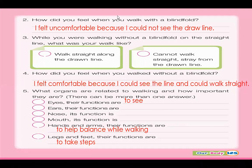Again, what organs are related to walking and how important are they? You don't need to answer all of these because we only need the eyes to walk, and also our hands and arms, and of course our legs. So these are the organs that are related to walking.